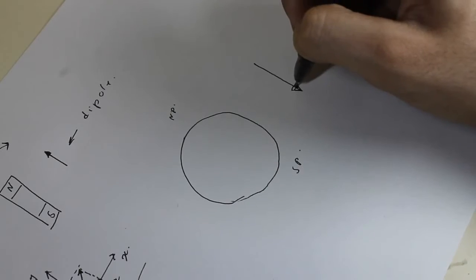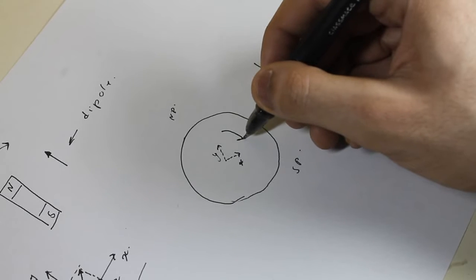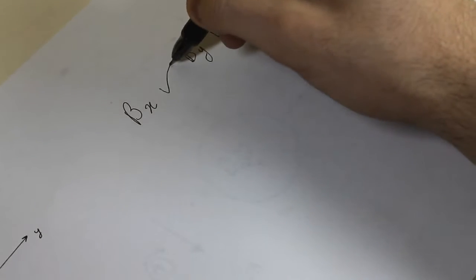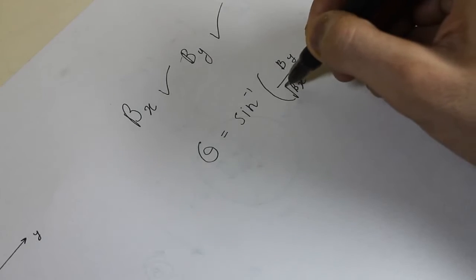So for our compass, earth is our huge bar magnet and we have x and y axis rotating with our compass. Knowing the components along each of the axis, we can deduce the direction of the actual field.